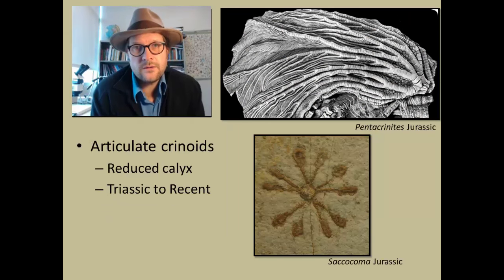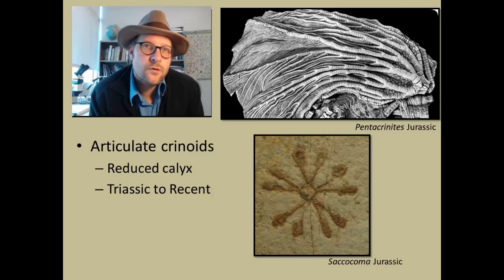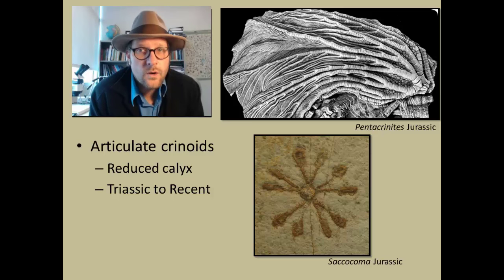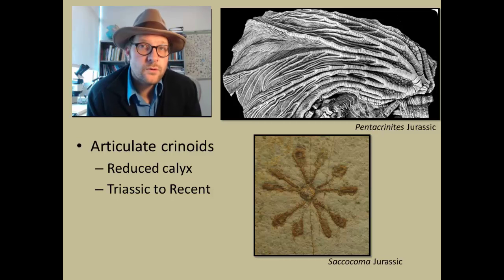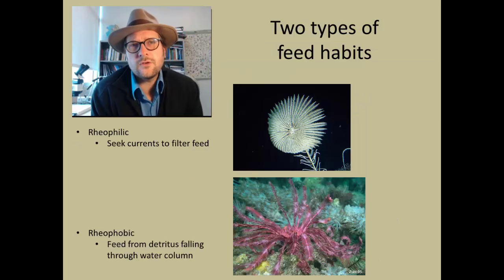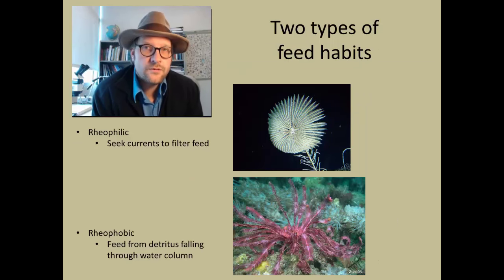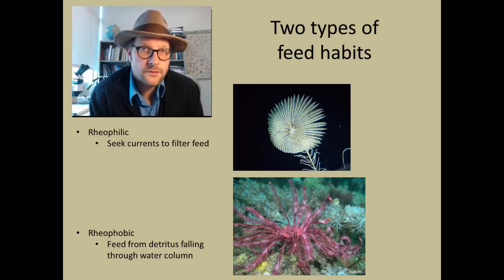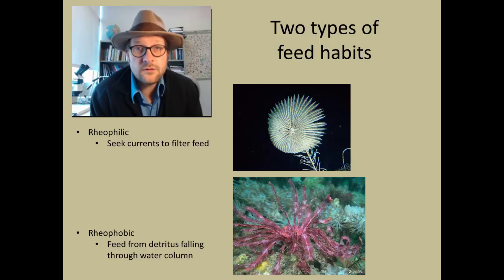The last group are the articulate crinoids, which lived after the Permian-Triassic extinction and are the group that living crinoids belong to. They have a highly reduced calyx with highly flexible arms that can move about freely. There are only about 25 genera today that are stalked, while most living crinoids are unstalked comatulids — also referred to as feather stars — which have roots but lack the columnar stalks. Living stalked crinoids exhibit two different types of feeding: either being rheophilic, meaning they seek out fast currents to filter feed, or rheophobic, where they feed on detritus slowly falling through gentle waters. These two styles of feeding can be good indicators to paleontologists about the flow of ocean currents, making crinoids great for reconstructing water flow and currents of the ancient past.